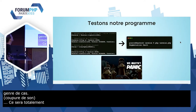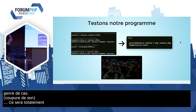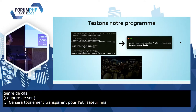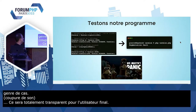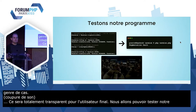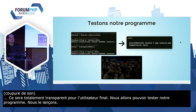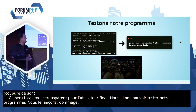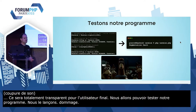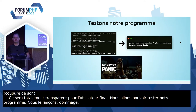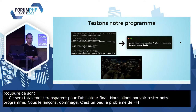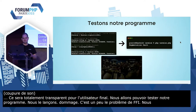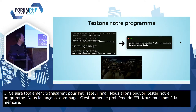On teste notre programme, on le lance et… dommage. C'est un peu le problème de FFI : on touche à la mémoire, donc on a les inconvénients du C aussi. Ce qui s'est passé, c'est qu'on a pris ce header Termios, mais sous Linux et sous Mac ce n'est pas forcément les mêmes. Tous les flags sous Linux sont sur 32 bits, mais sous Mac c'est du 64 bits. Les structures qu'on a créées n'avaient pas la bonne taille, donc quand on les a passées à la fonction, il a essayé d'accéder à des emplacements mémoire qui n'existaient pas, et ça a planté.